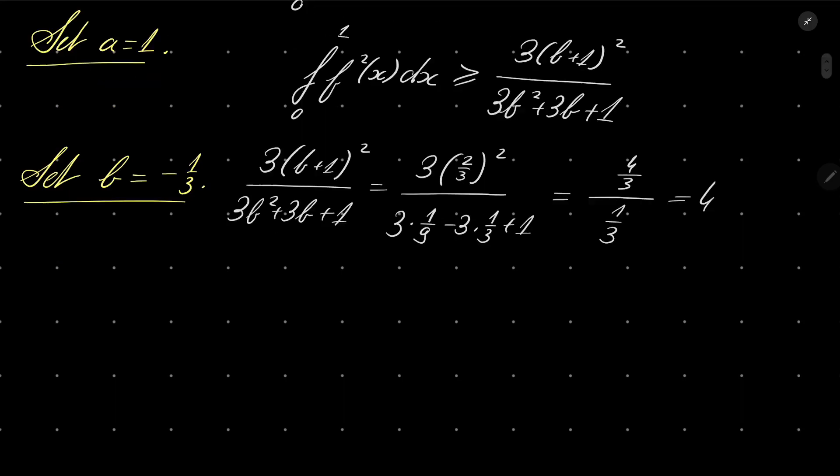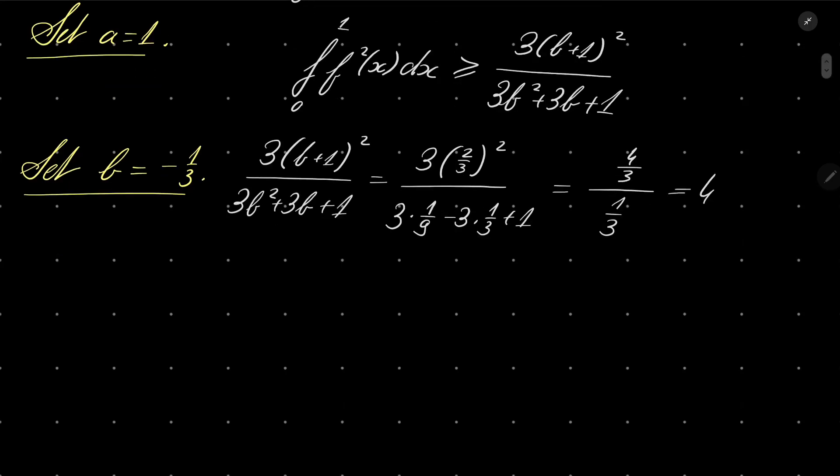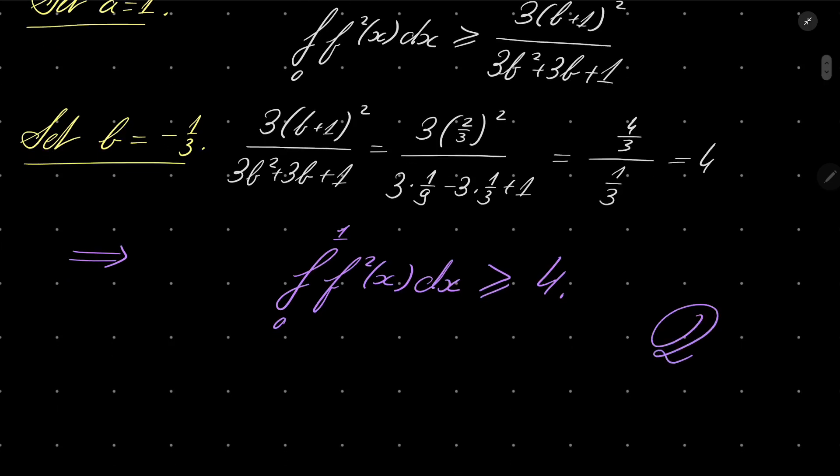And that means, in particular, that our integral from 0 to 1 of f squared of x dx is indeed greater than or equal to 4, which closes the proof.